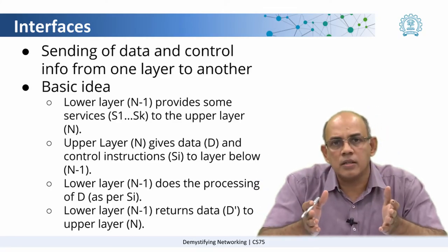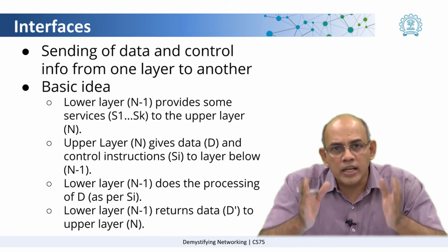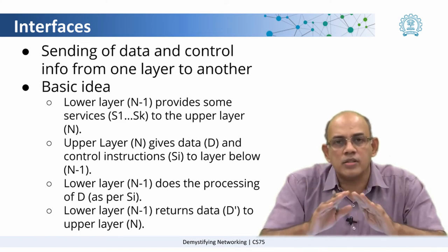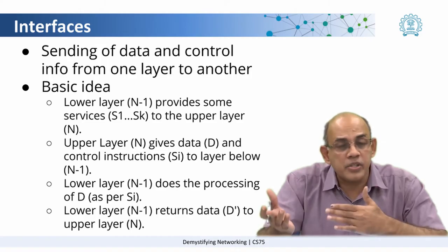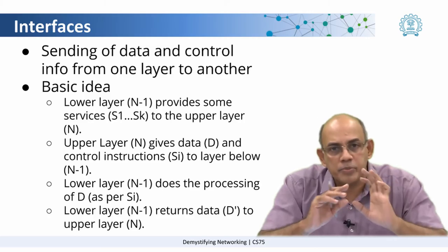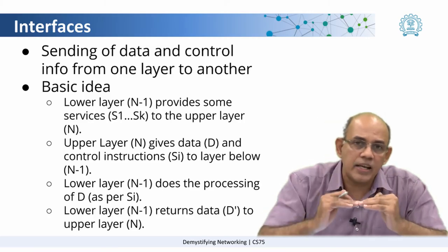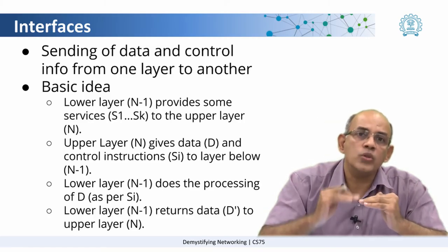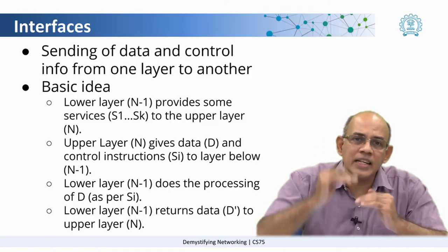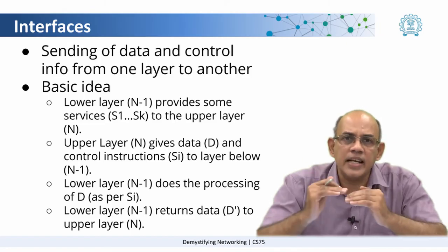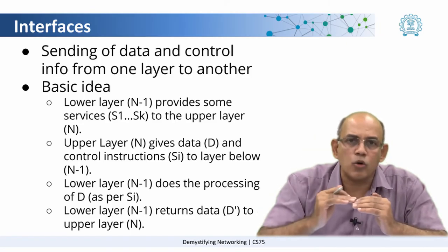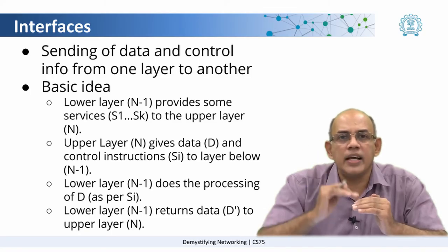So when you make a web request, what happens is your request is packaged and sent across the network. At the web server side, the request is again received in the original form by the web server. Each layer provides a service to the layer above it through what is called the interface. The interface is nothing but the sending of data and some control information from one layer to the other.